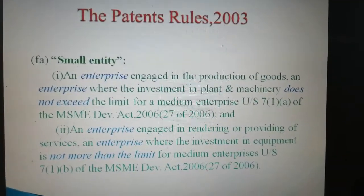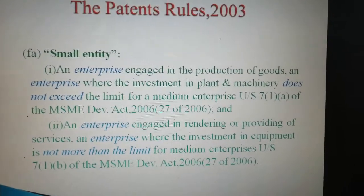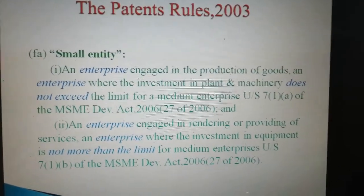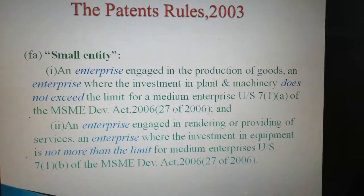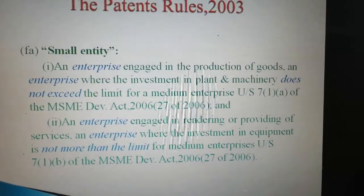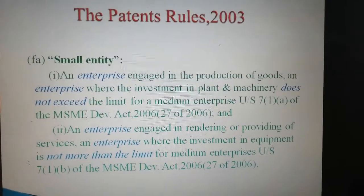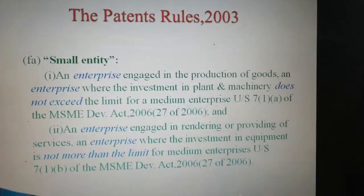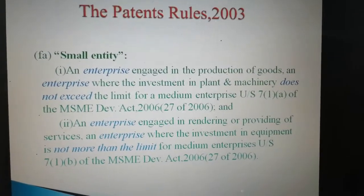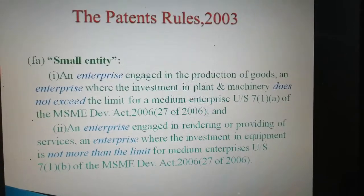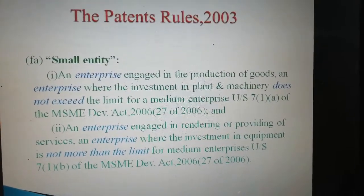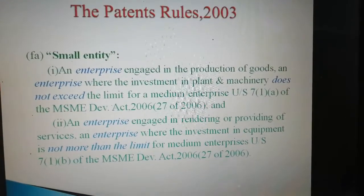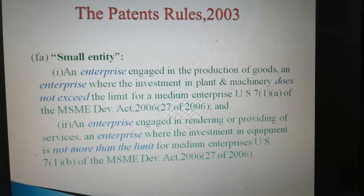Clause FA is about 'Small Entity'. Sub-clause 1 says: an enterprise engaged in the production of goods, where the investment in plant and machinery does not exceed the limit for a medium enterprise under Section 7, Sub-section 1, Clause B of the MSME Development Act 2006. Sub-clause 2 says: an enterprise engaged in rendering or providing of services, where the investment in equipment is not more than the limit for medium enterprises under Section 7, Sub-section 1, Clause B of the MSME Development Act 2006.